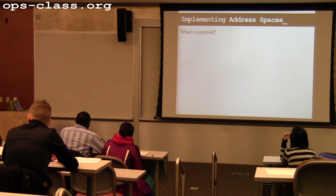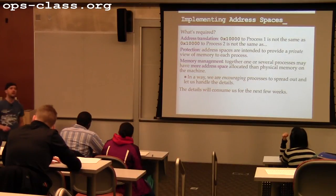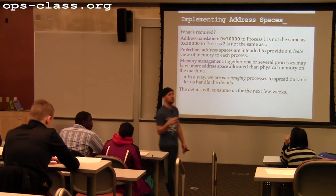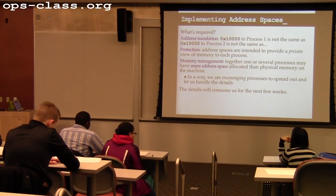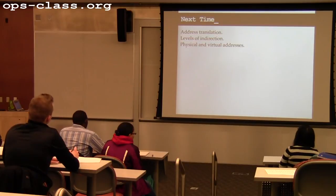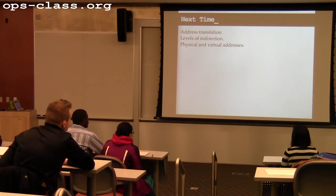We need to handle the internal fragmentation inherent to address spaces. Address spaces are extremely sparse — a process has a view of 4 gigabytes but at any given time is probably actively using like 0.1% of that. If I don't do this carefully, I can have a lot of internal fragmentation. We need to figure out a way to solve that problem. On Friday, we'll talk about address translation — the hammer that pounds in all of these nails — and we'll start distinguishing between physical and virtual addresses.